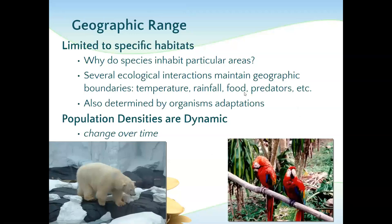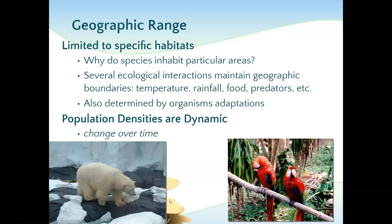Why do they pick the areas they pick? Lots of ecological interactions maintain the geographic boundaries — like temperature, rainfall, food, predators. There is a dynamics to the density; the population may change over time or even within a year. We know about migratory patterns. This polar bear needs ice to fish, and if the ice caps are melting away, he's going to lose his fishing resources, which will be a detriment to his ability to survive.